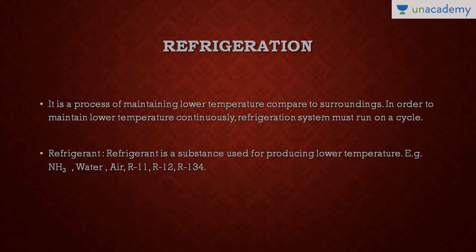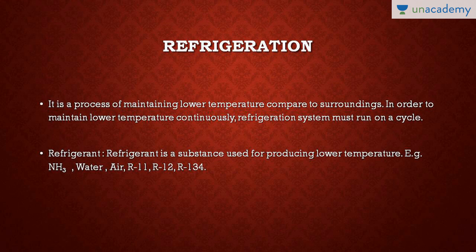To start with, what is refrigeration? It is a process of maintaining a lower temperature compared to the surroundings. For example, the surrounding temperature is around 25 or 30 degrees Celsius and you want to maintain the temperature of a room below that — that process is known as refrigeration. The system on which your refrigerator is working is a refrigeration system.